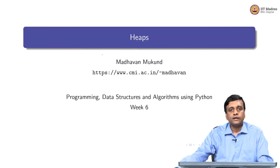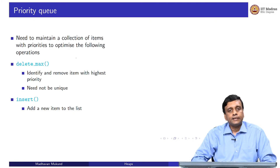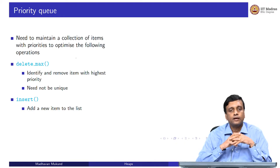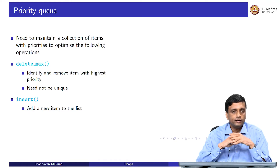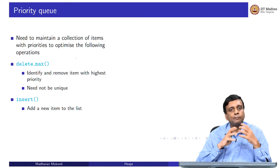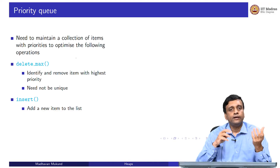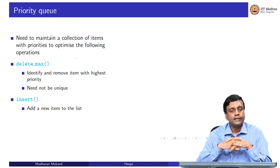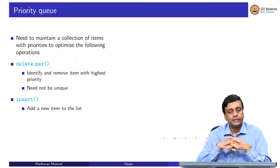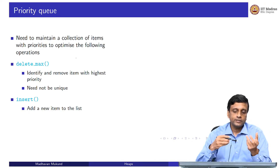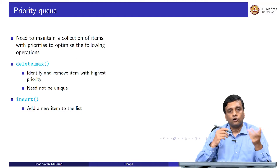We are now going to look at heaps, which are a tree implementation of priority queues. Remember that in a priority queue, our goal was to maintain a collection of items, where each item has a priority. There are two operations: inserting a new item with high or low priority, or processing an item by finding and deleting the highest priority item — called delete max. Delete max need not be unique; there could be duplicates.